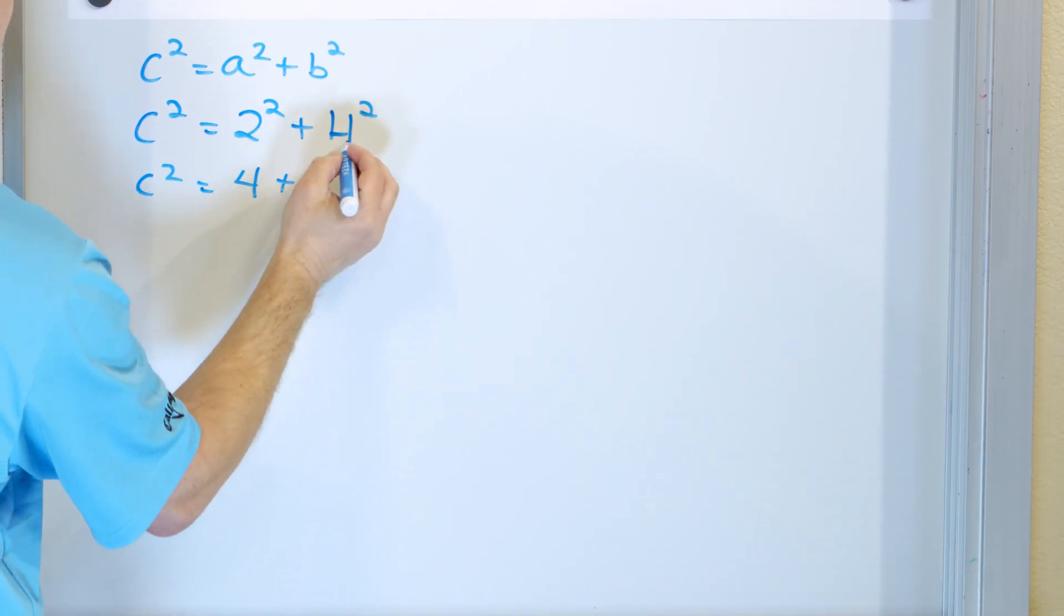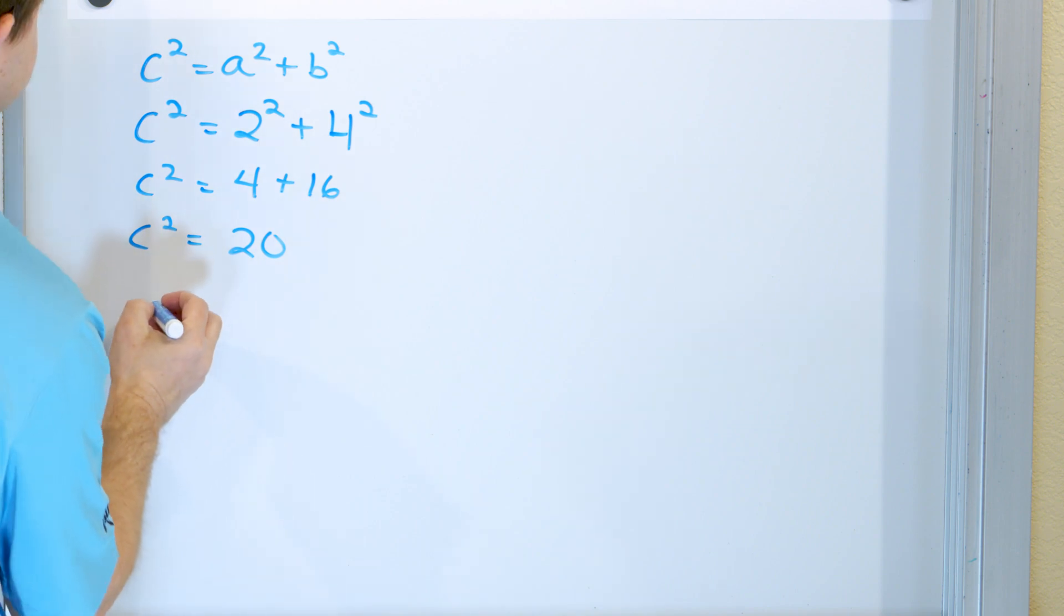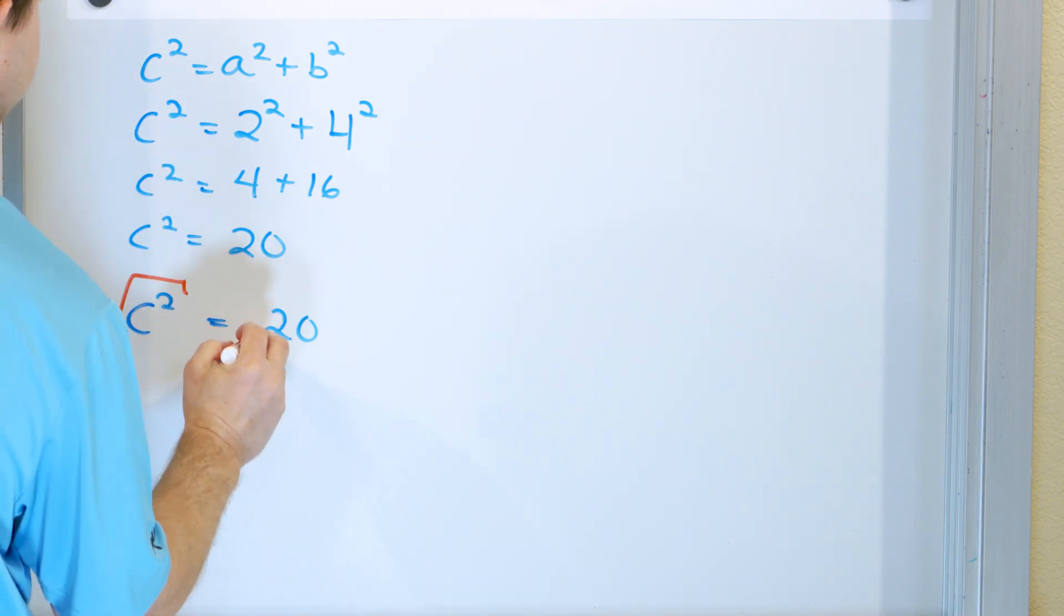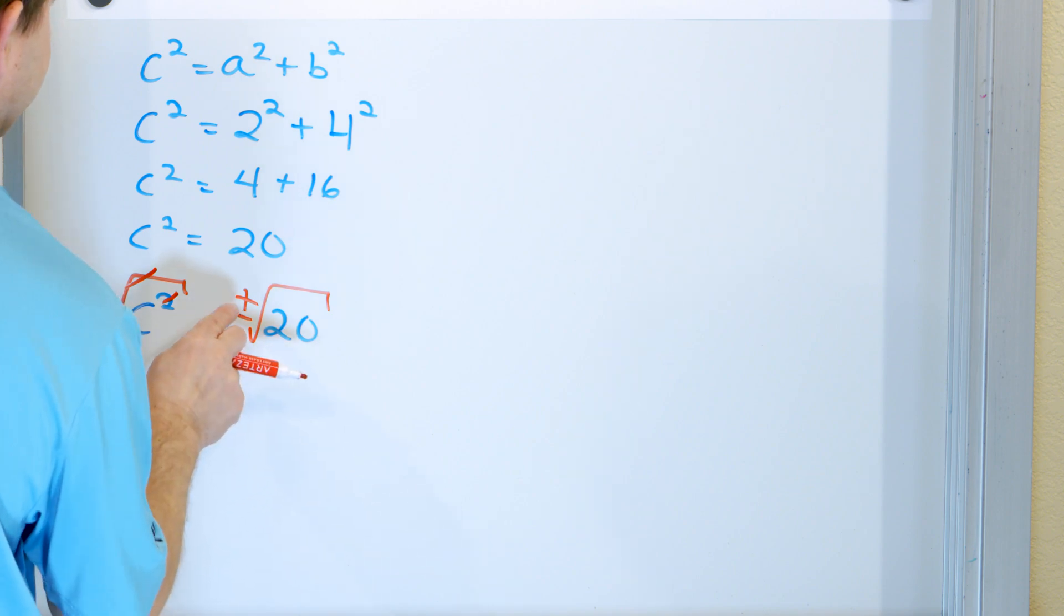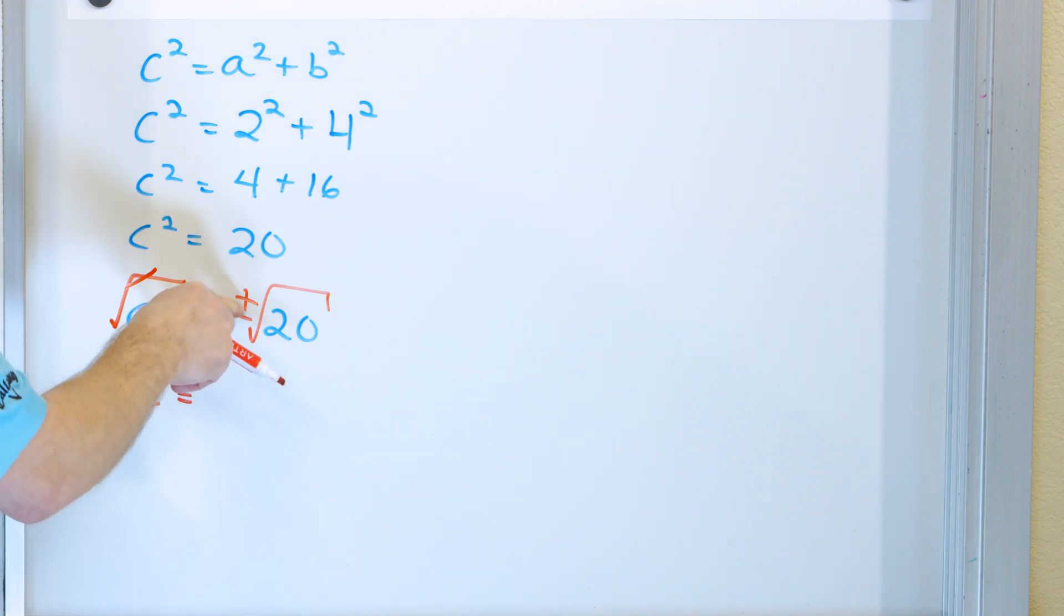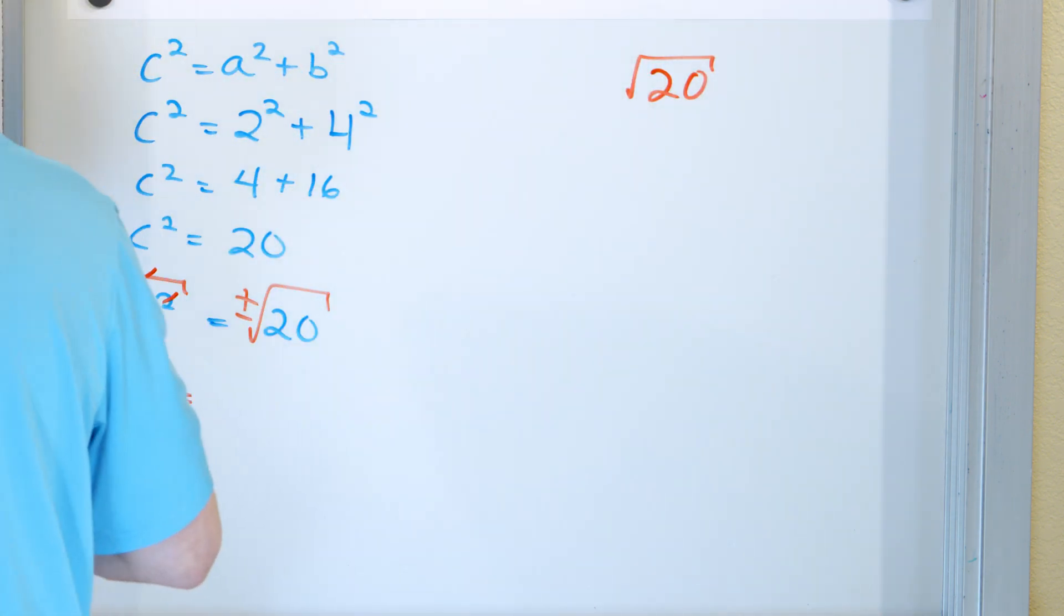So what do we have here? 2 times 2 is 4, and 4 times 4 is 16. And so C squared is going to be equal to 20. Now, we don't want C squared, we want to figure out what C is equal to. So, how do we do that? We have to do the opposite of whatever we've done here, which is squaring. So we're going to do the square root, and we're going to do it to both sides, and we have to add the plus minus. So we're left with C is equal to, we're going to throw away the negative answer. We're going to get the positive answer, square root of 20.